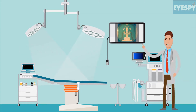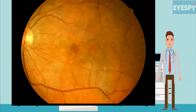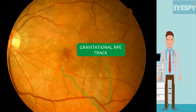Here is the fundus photograph of the patient. If you look carefully, there are diffuse pigmentary changes all over the macula. This is referred to as diffuse retinal pigment epitheliopathy. Also to be noted is an inferior RPE track, usually in a teardrop configuration due to gravitational tracking of subretinal fluid.